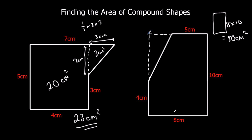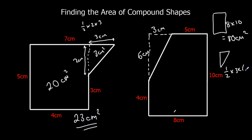We need to work out the area of this triangle. The whole length here is 10 and this bit is 4, so this must be 6. The whole length here is 8 and we've got 5, so we need another 3. So the triangle is half times 3 times 6. 3 times 6 is 18, half that is 9. So the area of the triangle is 9 centimeters squared. Rectangle take away the triangle: 80 take away 9 is 71 centimeters squared.